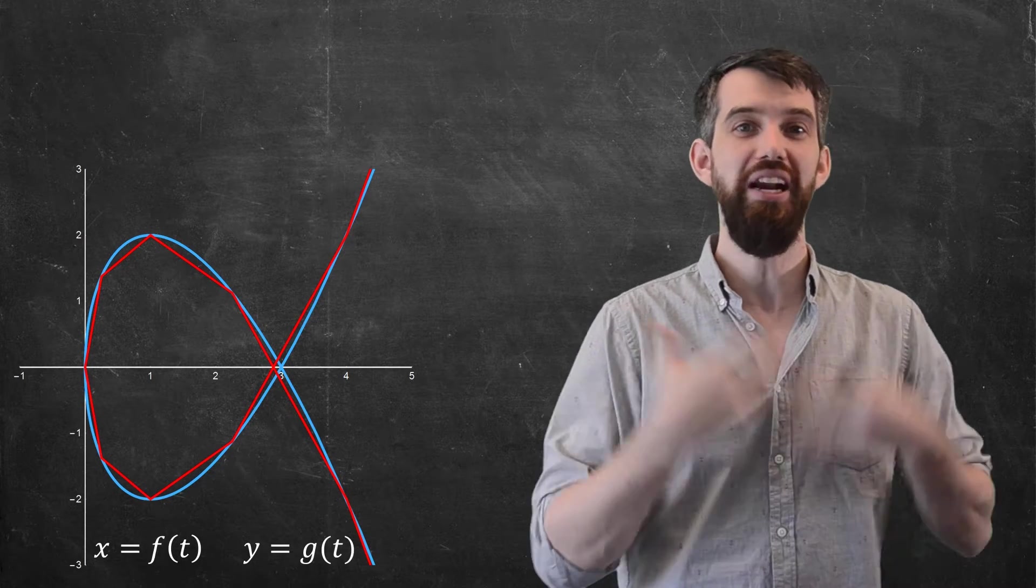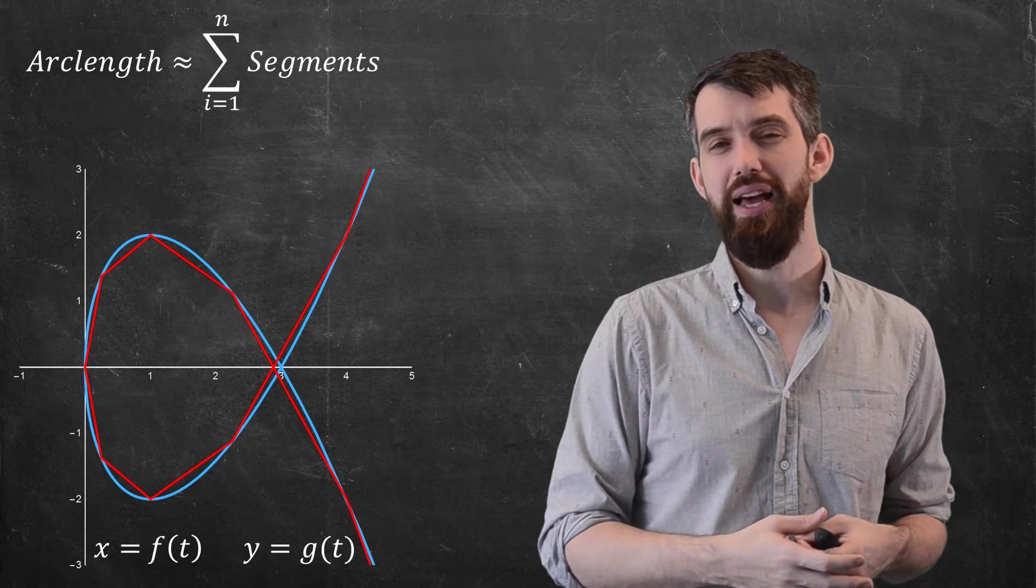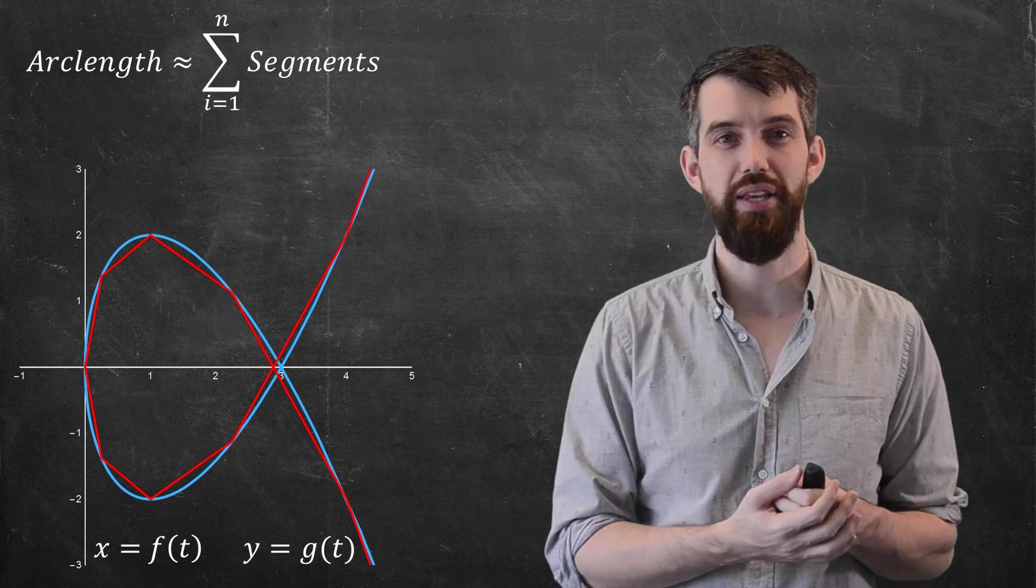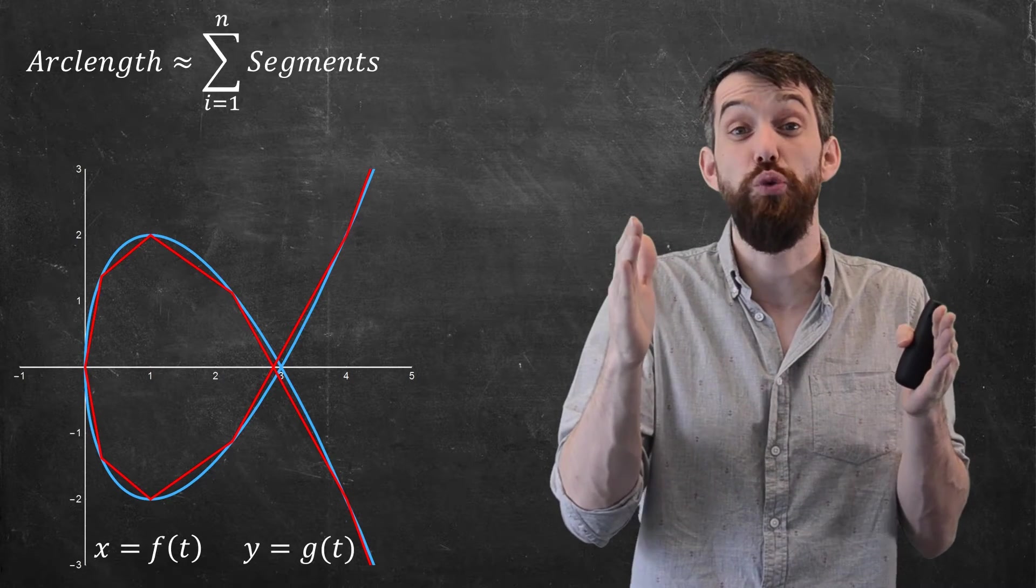So the guiding philosophy for our formula here is that the arc length is going to be the sum of all of these little line segments, and I can figure out the length of any individual line segment.